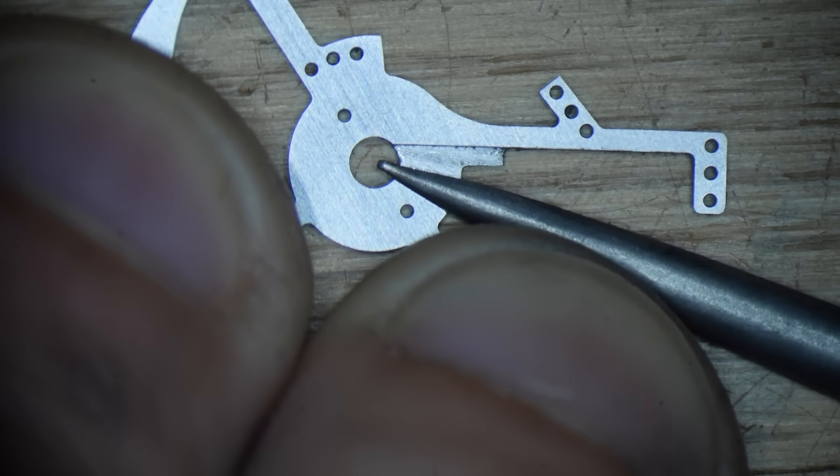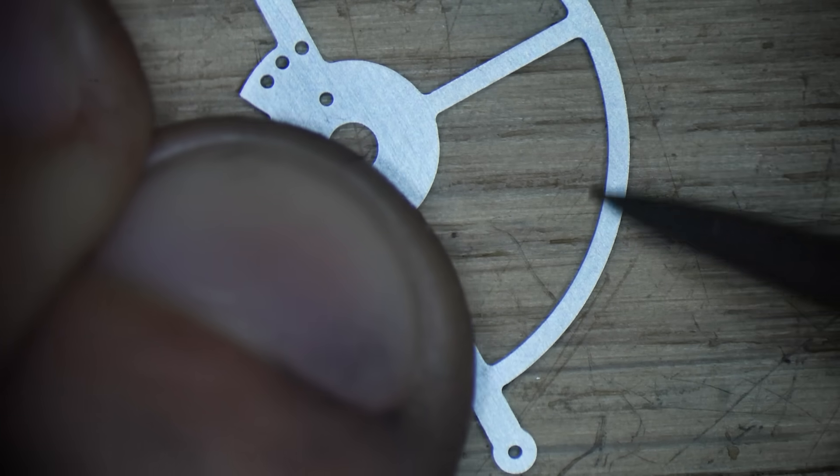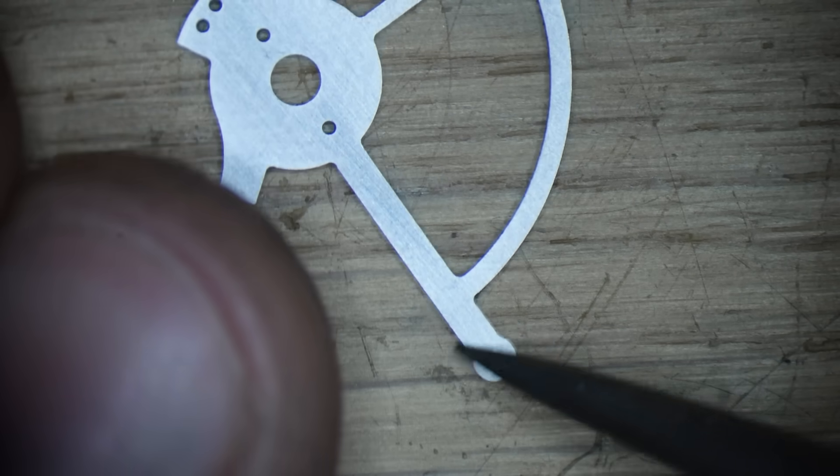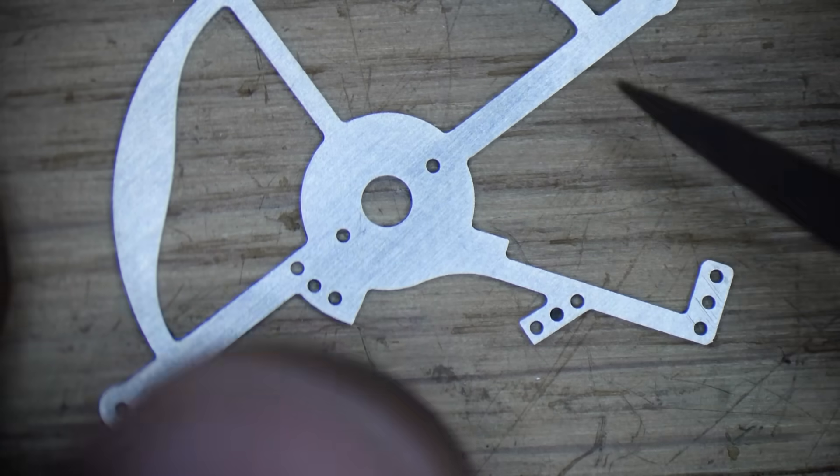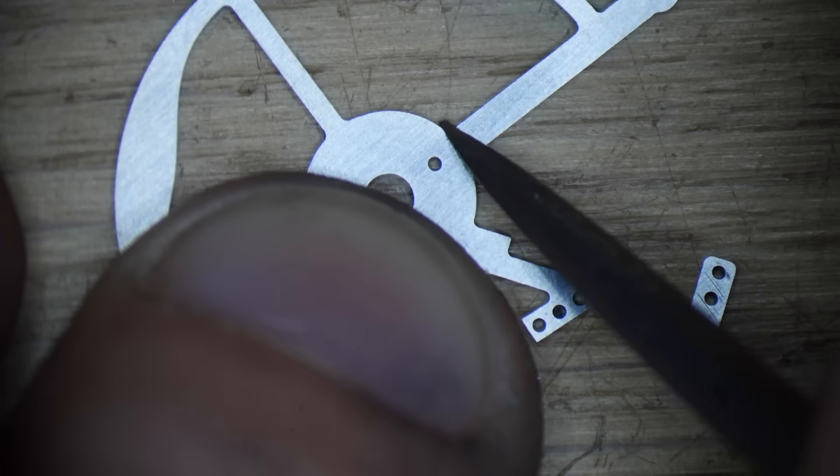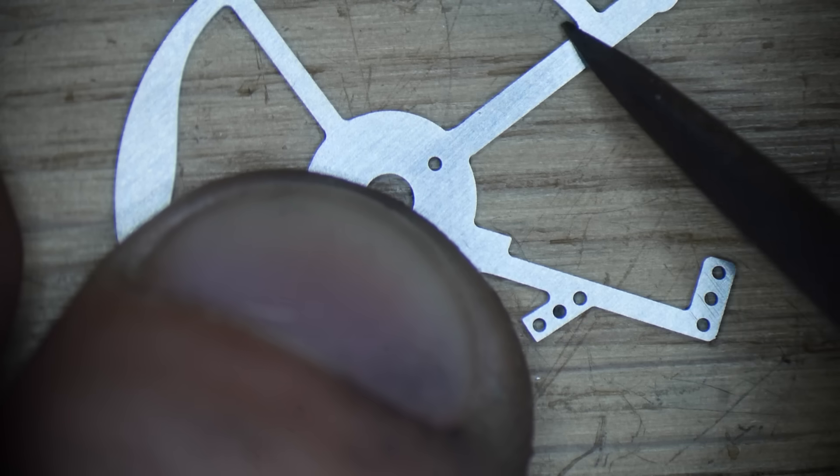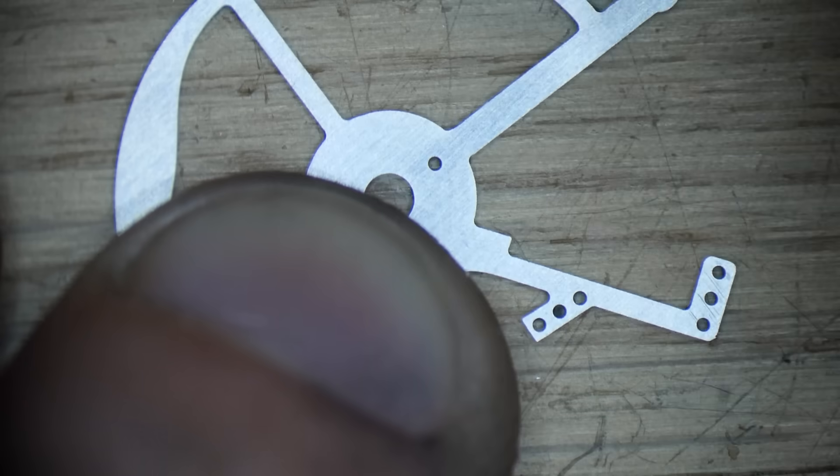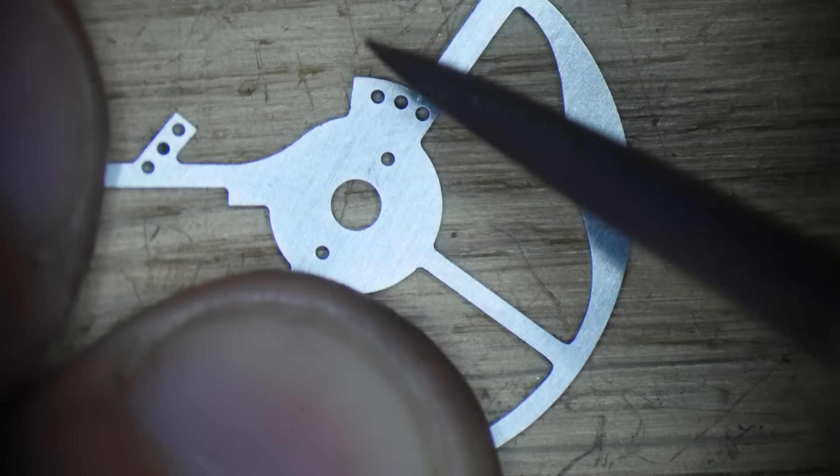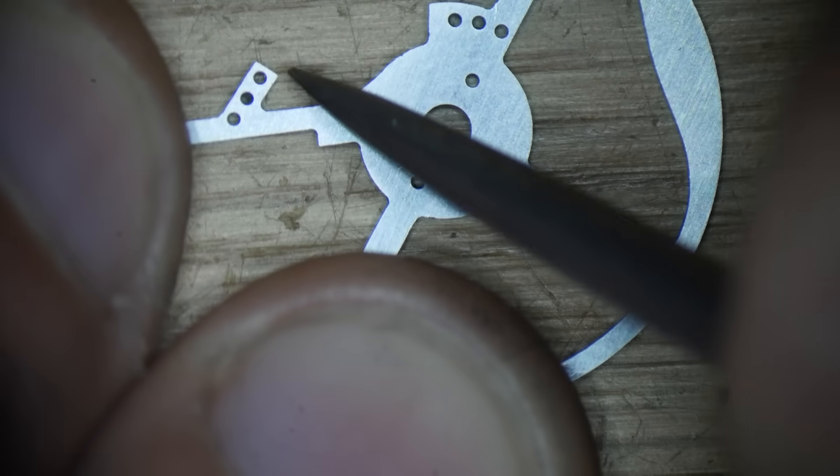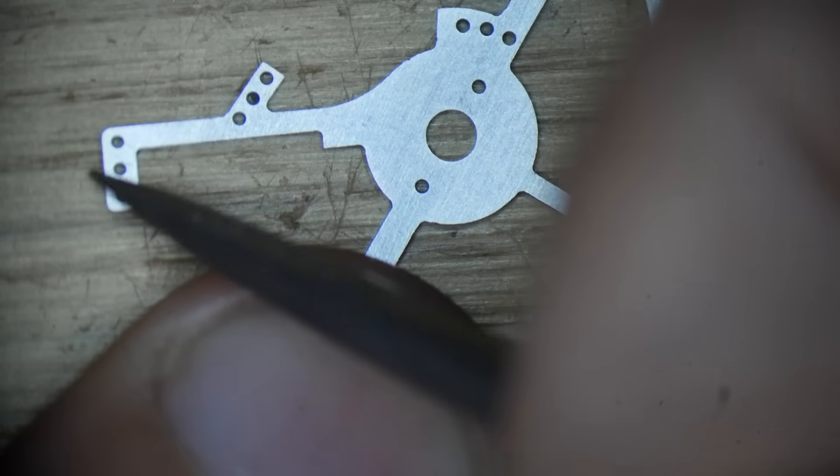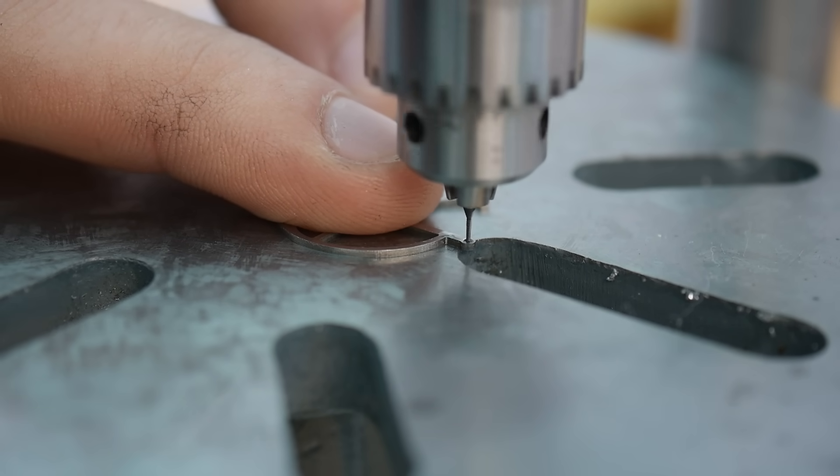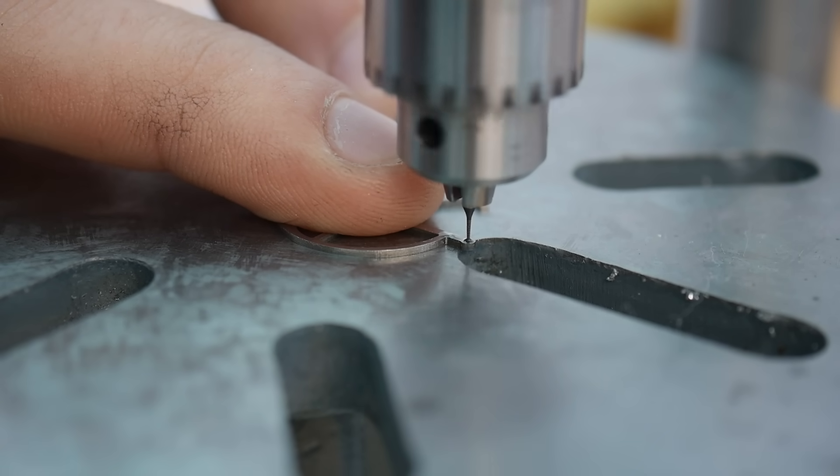The second important consideration in the design of the tourbillon cage is the mass. We want to minimise the inertia of the cage to reduce energy loss in the system. Initially, I investigated using titanium for the cage to reduce its mass, but since most of the cage weight is attributed to offsetting the escapement weight, titanium didn't actually save much weight at all. I think it might be worth reconsidering in combination with a more symmetrical escapement, such as a lever or coaxial.